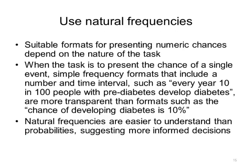Another best practice is to use natural frequencies. When the task is to present the chance of a single event, simple frequency formats that include a number and time interval — such as 'every year, 10 in 100 people with prediabetes develop diabetes' — are more transparent than formats such as 'the chance of developing diabetes is 10%.' Simply saying 10% is problematic because it does not specify the time span nor the denominator. There is good evidence that clinicians and patients alike find natural frequencies easier to understand than probabilities, suggesting that decisions based on frequencies are more informed. There is also growing evidence to support the use of icon arrays to present natural frequencies, which are well understood and effectively support communication about individual statistics.